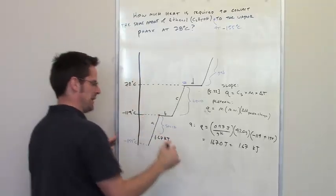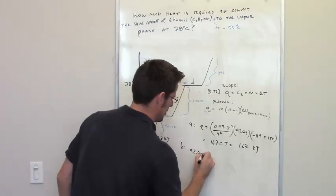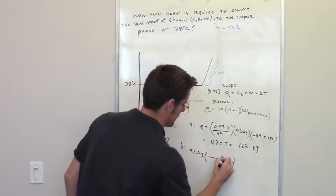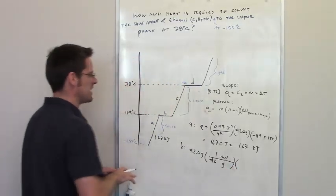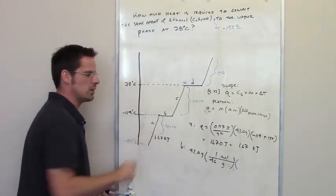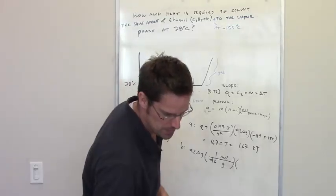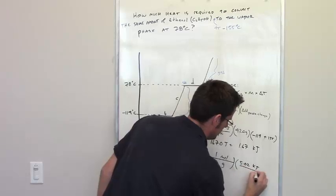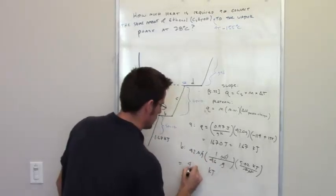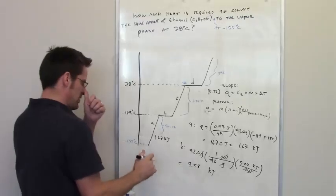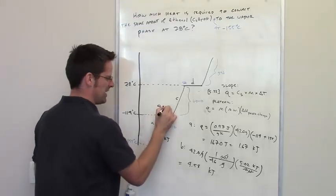Now for plateau B, the melting step. Using the plateau equation: 42.0 grams times (1 mol / 46 grams) times the delta H of fusion, which is 5.02 kilojoules per mole. Moles and grams cancel, giving 4.58 kilojoules to traverse plateau B.